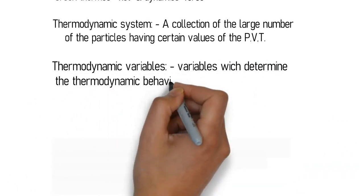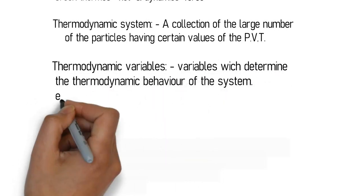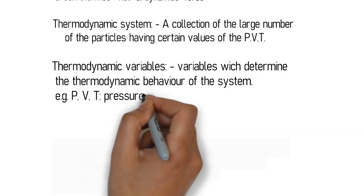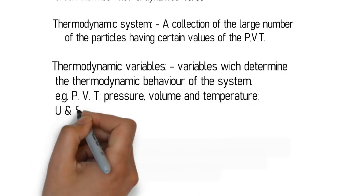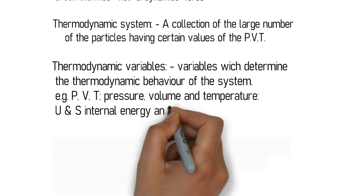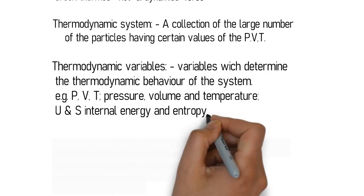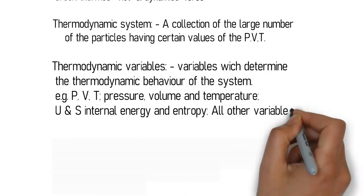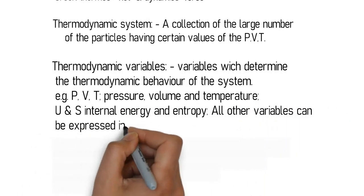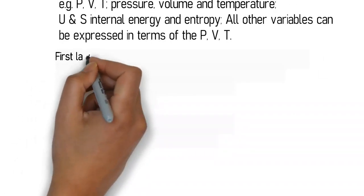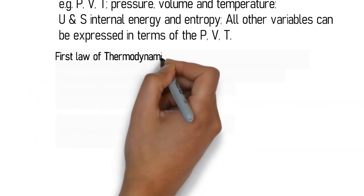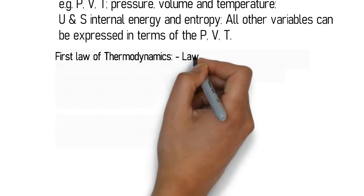Thermodynamic variables determine the thermodynamic behavior of the system. For example, pressure, volume, and temperature. Internal energy and entropy, denoted by U and S, are other variables. All other variables can be expressed in terms of pressure, volume, and temperature.